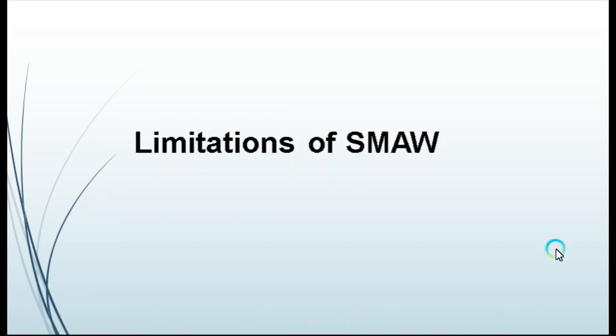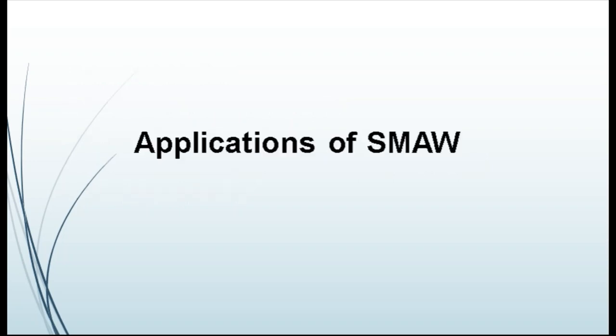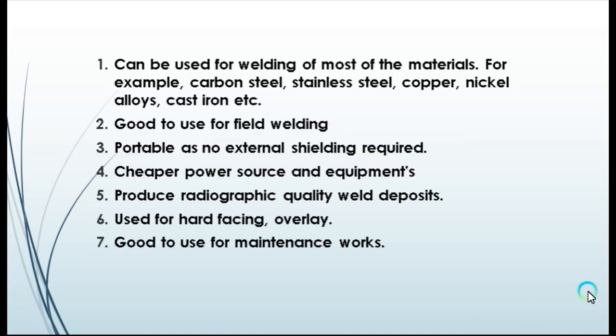The limitations of the SMAW process include: 1. Less deposition. 2. Frequent start-stop points. 3. Need for slag removal. 4. Unusable stubs add to material waste. 5. Less productivity. The major applications of shielded metal arc welding include: it can be used for welding most materials such as carbon steel, stainless steel, copper, nickel alloys, and cast iron. It is good for field welding, portable as no external shielding is required, uses cheaper power sources and equipment, produces radiographic quality weld deposits, and is used for hard facing, overlay, and maintenance works.